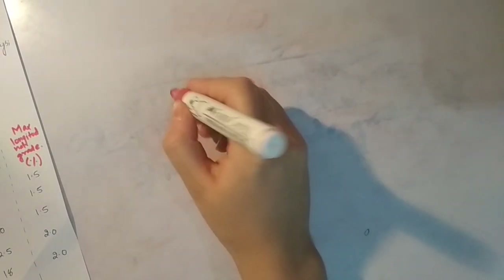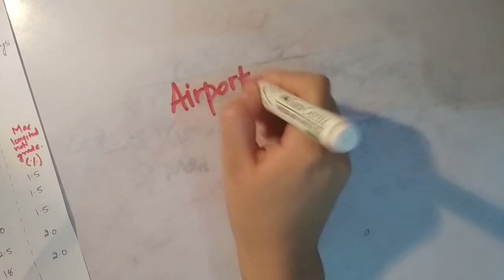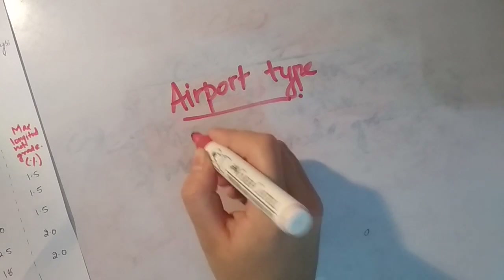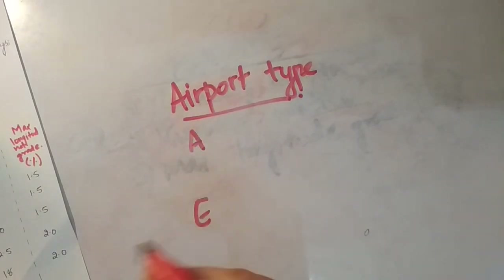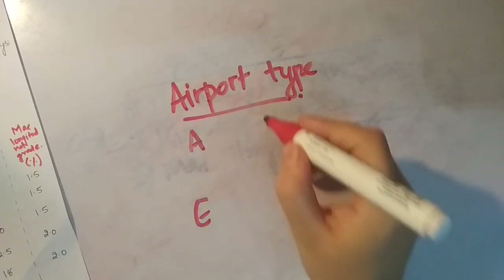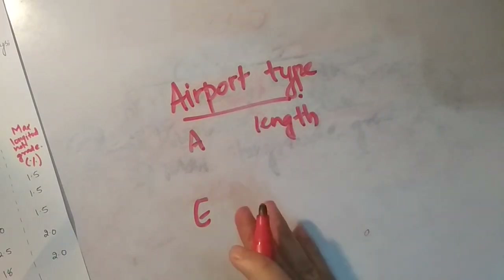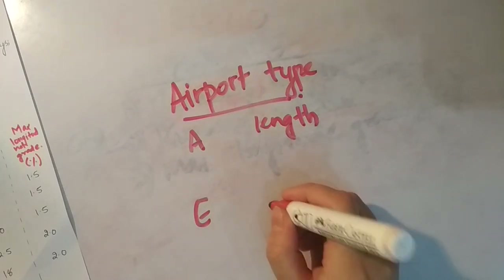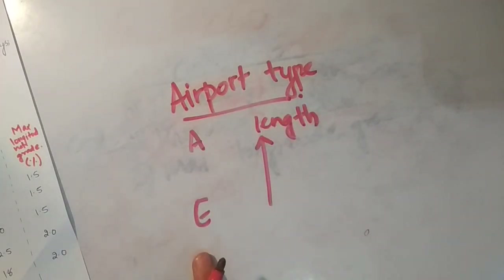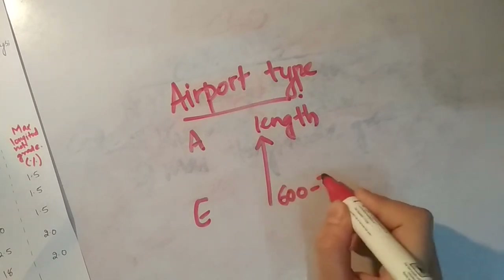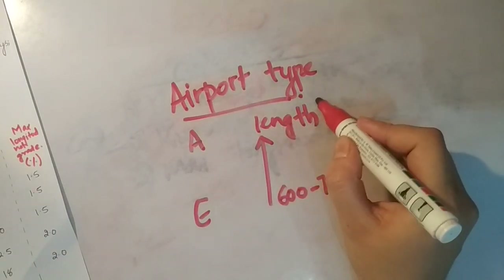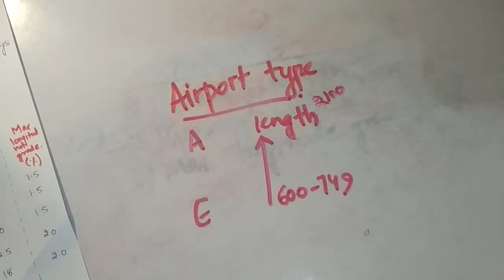जब आप airport type A to E जाते हो, आपकी length of the runway increase होती है from E to A। मतलब E पर आपकी lowest length of runway है और A पर maximum length of runway है। E पर यह 600 to 749 meters था और A पर 2100 meters and greater than 2100 meters — so length of the basic runway increases from E to A.